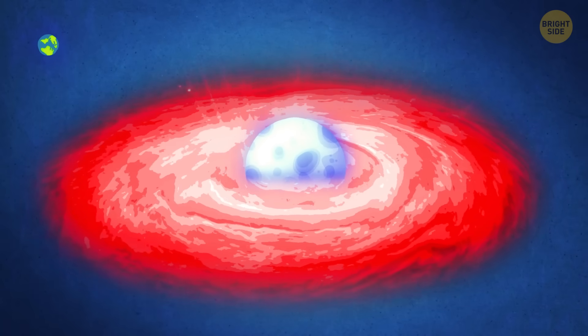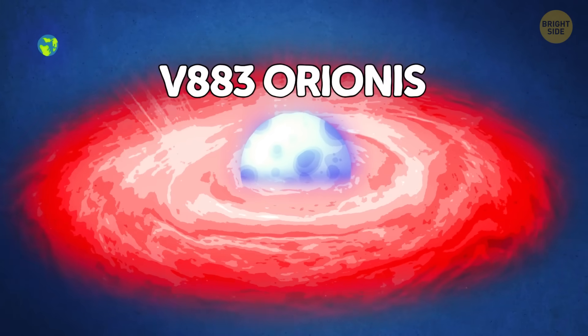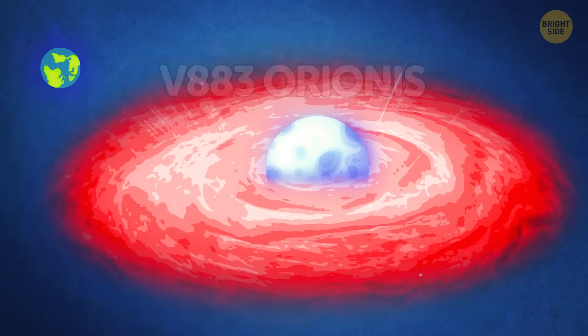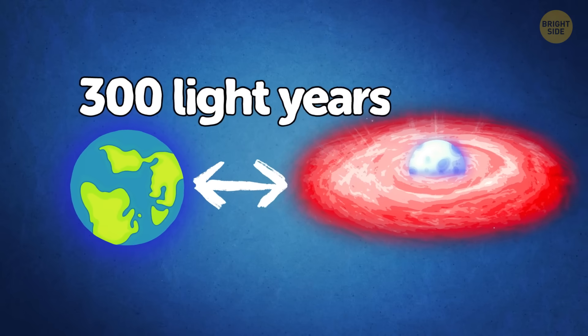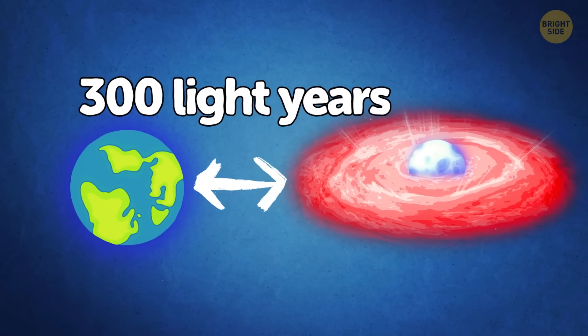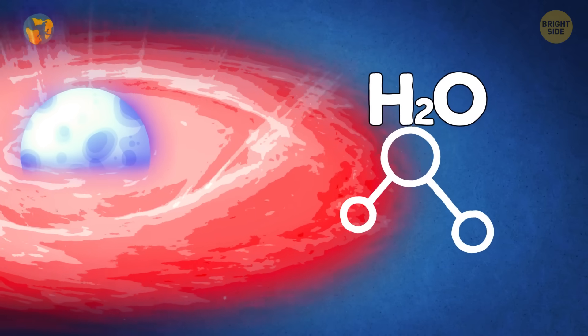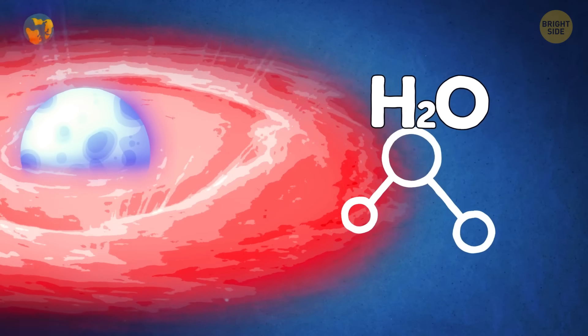Recently, they took a sneak peek at a young star called V883 Orionis. This star is located about 1,300 light-years away from us. And they spotted something incredible! Water vapor surrounding the star.